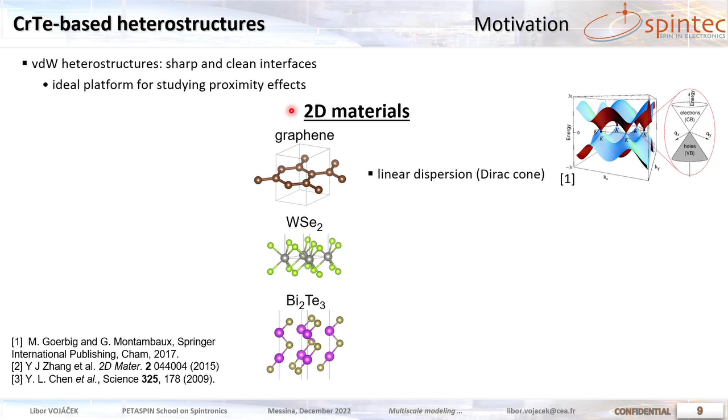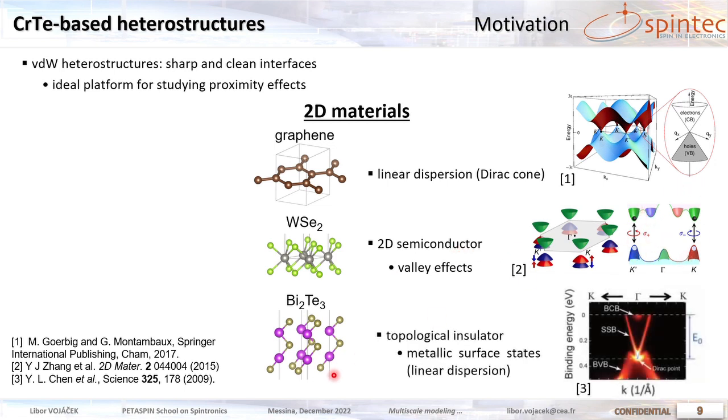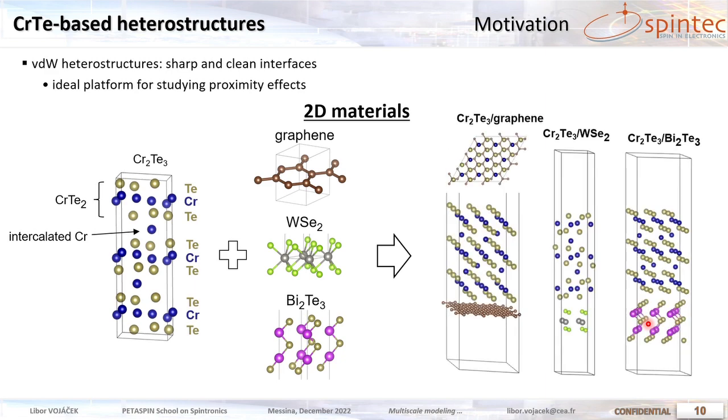So there are three 2D materials of choice. The first is graphene with its notoriously known linear dispersion, then tungsten diselenide, which is a 2D semiconductor, and there is some spin-dependent valley effects, and lastly bismuth telluride, which is a topological insulator. So in the bulk gap there are surface states with linear dispersion, which are metallic. So we can interface these materials and build these heterostructures.